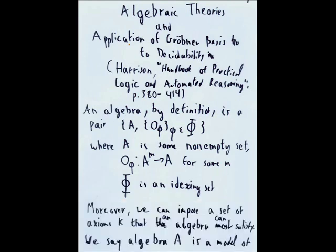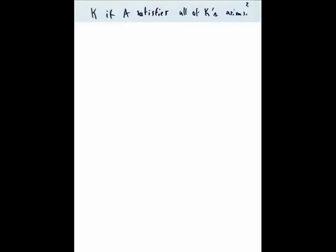Moreover, we can impose a set of axioms K that an algebra can satisfy, and that is what distinguishes different algebras. So we say algebra A is a model of K if A satisfies all of K's axioms.